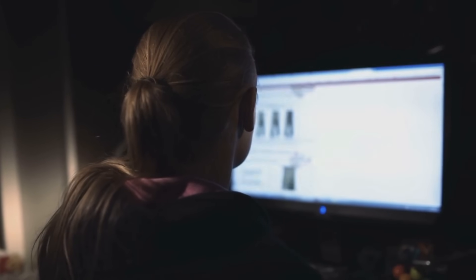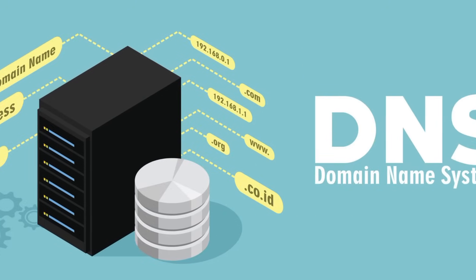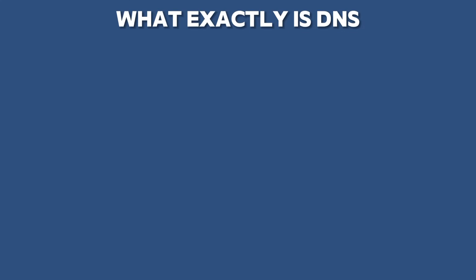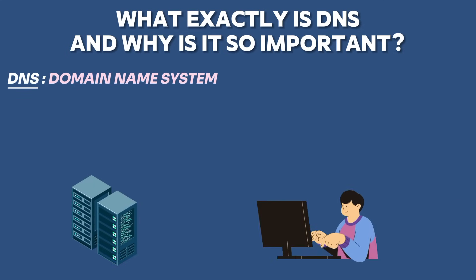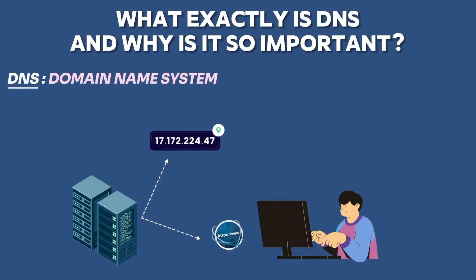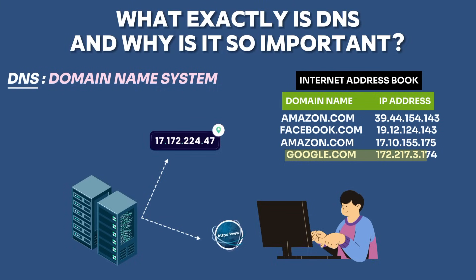Every time you browse the internet, send an email, or watch a video online, you're using something called DNS. DNS, or the Domain Name System, is a fundamental component of the internet that translates human-readable domain names into machine-readable IP addresses. Essentially, it's like the internet's address book, facilitating the connection between a user-friendly domain name like google.com and the corresponding numerical IP address like 172.217.